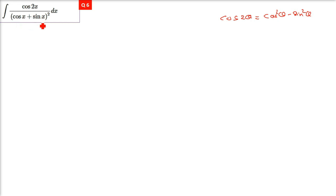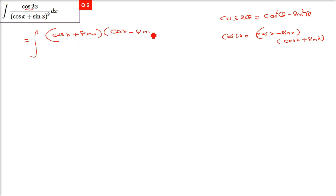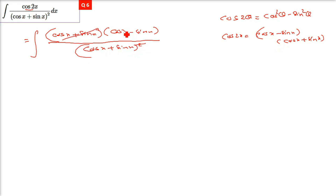The denominator is (cosx + sinx)². Now cos²θ − sin²θ is a² − b², so cos2x is essentially (cosx − sinx)(cosx + sinx). In the denominator we have (cosx + sinx)², so one factor of (cosx + sinx) cancels out.